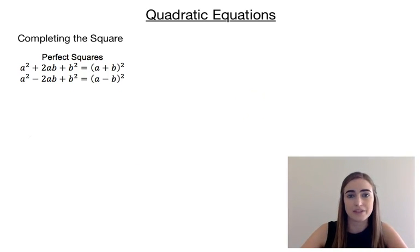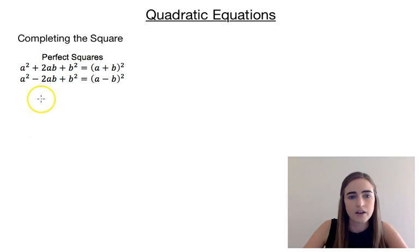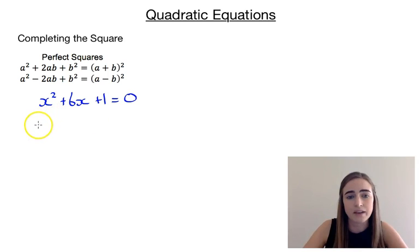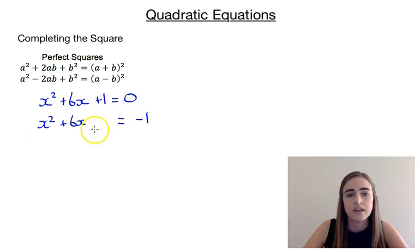Our third example we're going to solve by completing the square. The method of completing the square is based around your perfect square factorisation — we've got those written there to help us. Our equation is x squared plus 6x plus 1 is equal to 0. At the moment this isn't a perfect square. We need to make it into that form. So the first thing we're going to do is move the constant over the other side, giving x squared plus 6x is equal to minus 1.